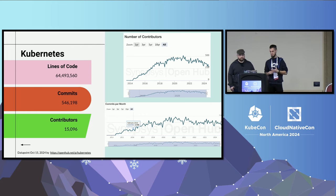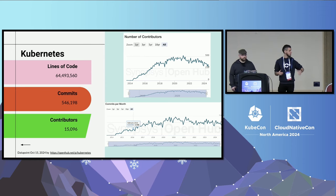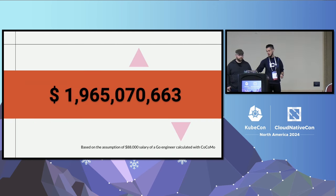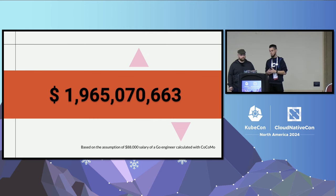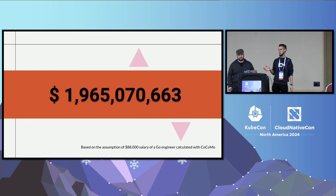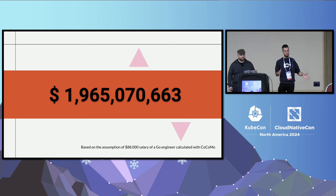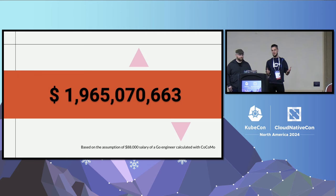Based on the numbers we get, we have around 15,000 contributors and 64 million lines of code. We basically figured out what Kubernetes would cost to build currently. Bob calculated what the mediocre salary across the world would be for a Go developer working in this space, and we found that it's $88,000.